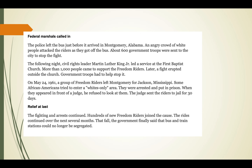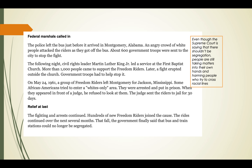Federal marshals were called in, but the police left just before the bus arrived in Montgomery, Alabama. An angry crowd attacked the riders as they got off. About 600 government troops were sent to stop the fight. The following night, civil rights leader Martin Luther King Jr. led a service at the First Baptist Church - more than 1,000 people came to support the freedom riders. Later a fight erupted outside the church and government troops had to help stop it. On May 24th, a group of freedom riders left Montgomery for Jackson, Mississippi. Some African Americans tried to enter a whites-only area, were arrested, and the judge sent the riders to jail for 30 days.